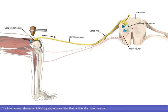The interneuron releases an inhibitory neurotransmitter that inhibits the motor neuron, making it less excitable and reducing the likelihood of an action potential being generated.